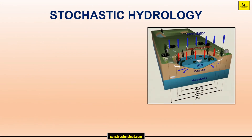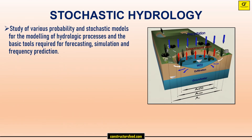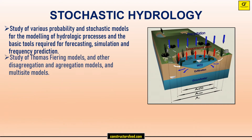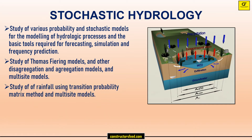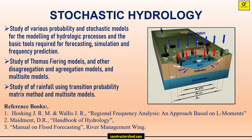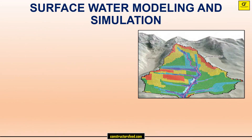Stochastic hydrology: study of various probability and stochastic models for the modeling of hydrologic processes and the basic tools required for forecasting, simulation, and frequency prediction. Study of Thomas-Fiering models and other disaggregation and aggregation models and multi-site models. Study of rainfall using transition probability matrix method and multi-site models.